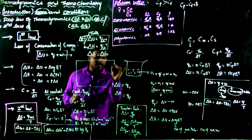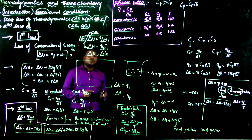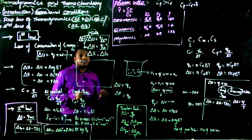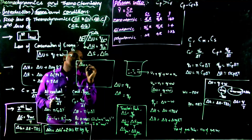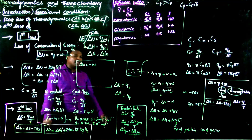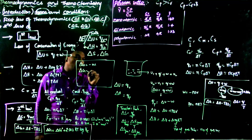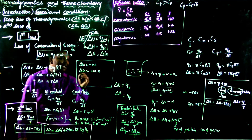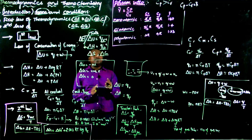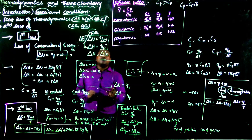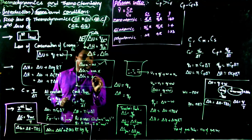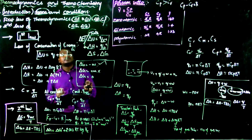Finally, the use of thermodynamics is to determine whether a process is spontaneous or non-spontaneous. If ΔG is negative, the reaction is spontaneous in the forward direction — more negative means more spontaneous. If ΔG is positive, the reaction is non-spontaneous. If ΔG = 0, the reaction has attained equilibrium. Take any reaction, calculate ΔG, and use these criteria to determine spontaneity.